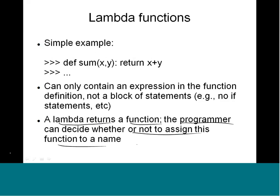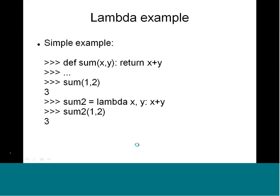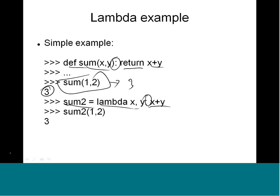A lambda returns a function object and the programmer can decide whether to assign it a name. Here is a simple example. Normally we define a function sum(x, y) and return x + y; calling sum(1, 2) returns 3. Using lambda we write: sum2 = lambda x, y: x + y — this is just a shorthand for the same definition. Calling sum2(1, 2) gives the same result. Lambda functions are syntactic sugar for normal functions.